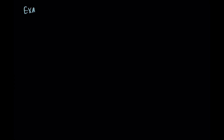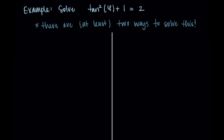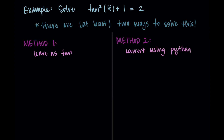I'm going to show you one last example, and this one has two different ways to solve it — I'll show you both. In many cases these problems have multiple ways of solving, but they should all lead to the same final answer. We're going to solve tan²(φ) + 1 = 2. There are at least two ways to solve this. The first method is leaving everything in terms of tangent, and the other is using the Pythagorean identity to simplify. Either method is totally fine — it's really up to what you see when you look at this or what you feel more comfortable with.